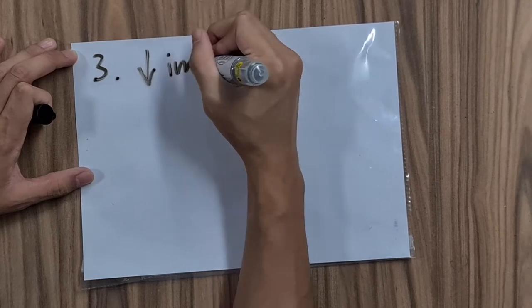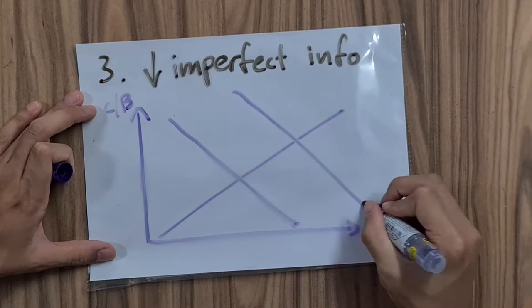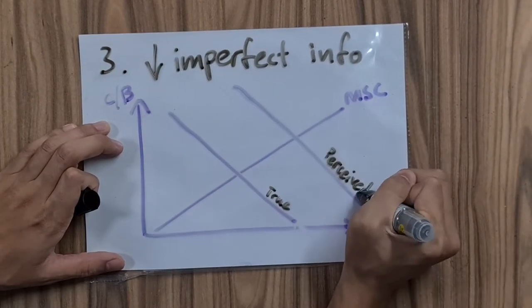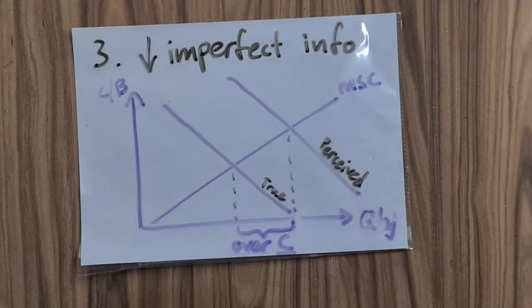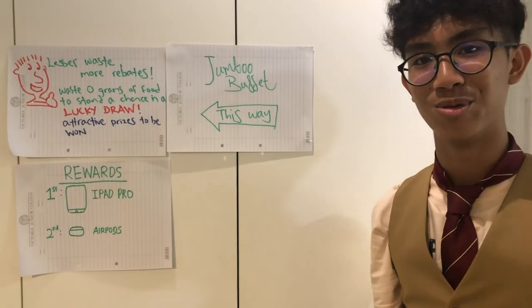On to our final solution: educate. This method reduces the imperfect information faced by consumers. As they now know the true marginal private benefit of consuming food, the overconsumption problem due to their initially higher perceived marginal private benefit will be reduced. Posters about a food waste program will be put up to raise awareness and tackle the problem of imperfect information. There will be weekly giveaways to encourage people to enter the buffet, aiming to help people learn to become more conservative about food waste.